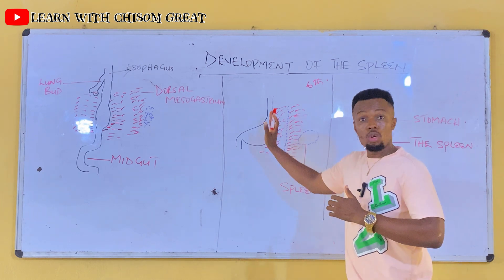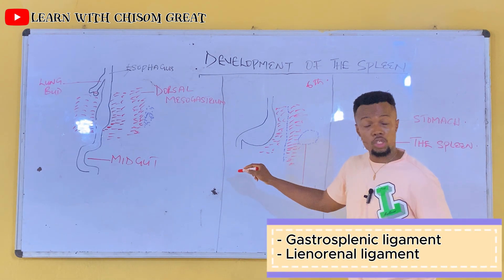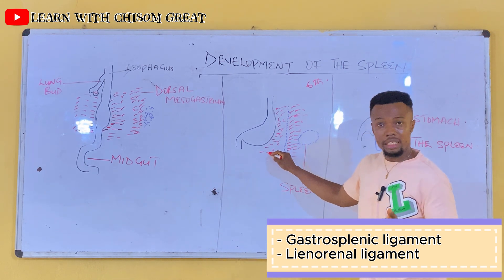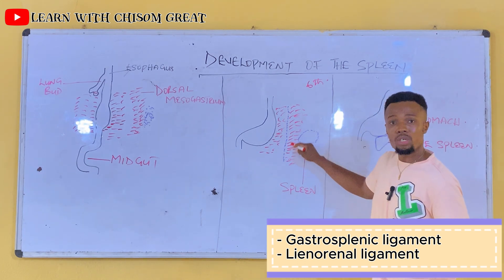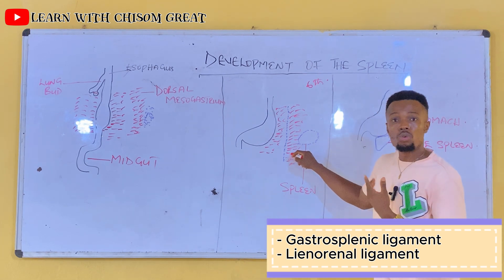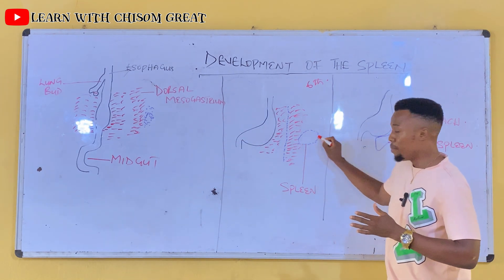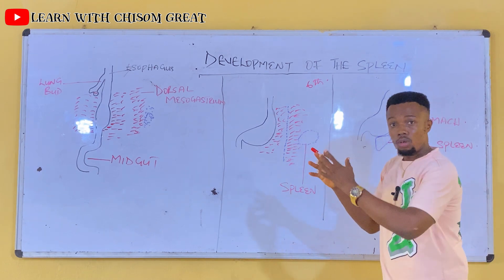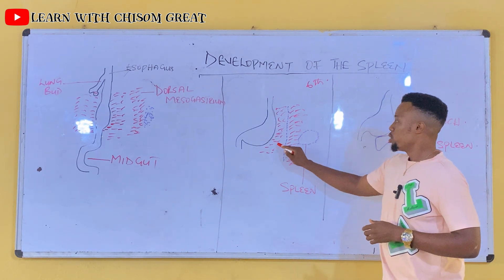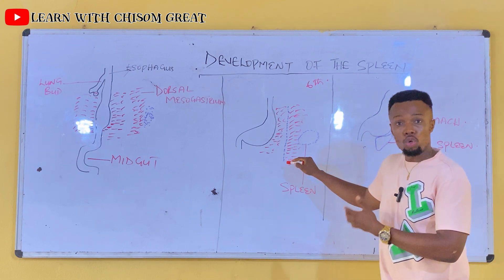This part that lies closer to the stomach gave rise to the gastrosplenic ligament, while the dorsal mesodersum that lies closer to the posterior abdominal wall gave rise to the splenorenal ligament. As this mass of mesenchymal cells comes together, they form a nodule. By then, this part has given rise to the gastrosplenic ligament, and this part has been transformed into the splenorenal ligament.